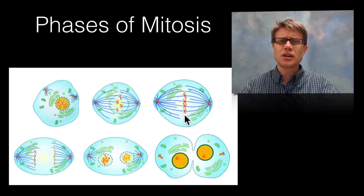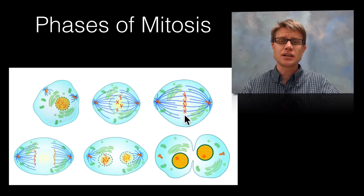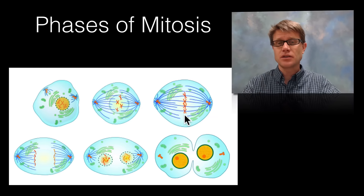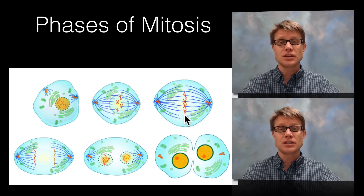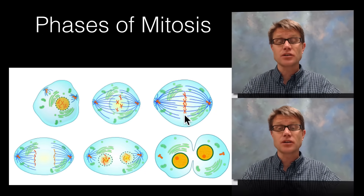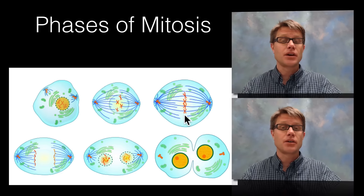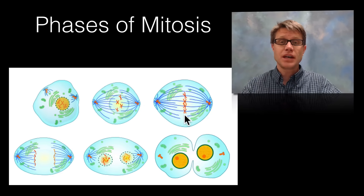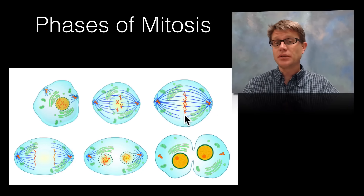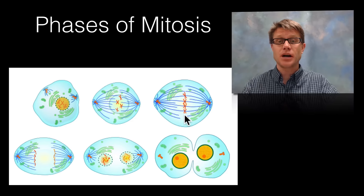You should also understand what's the point of mitosis. Mitosis is technically the division of the nuclei, but what we're really doing is making sure we can make two exact daughter cells that are identical to that parent cell. And that's how you went from that fertilized egg — the zygote — to the billions of cells in your body.